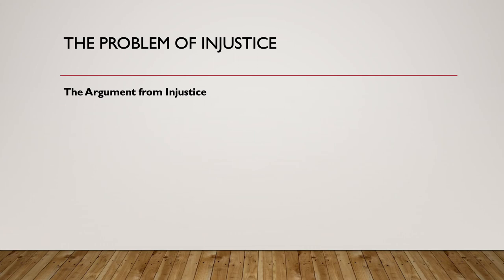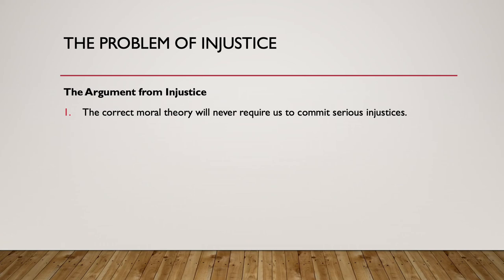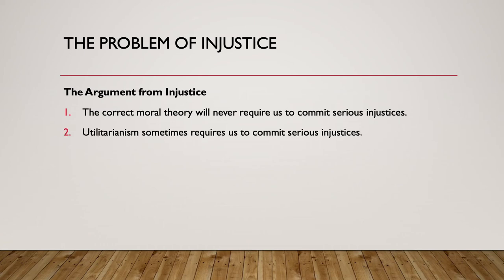However, this moral flexibility comes back to haunt utilitarianism. There is nothing intrinsically wrong with violating people's rights or doing an injustice — these are merely means to an end. So when we can better achieve that end by violating rights or doing injustice, utilitarianism requires that we do so. That leads to the argument from injustice: premise one — the correct moral theory will never require us to commit serious injustices. Premise two — utilitarianism sometimes requires serious injustices. Therefore, utilitarianism is not the correct moral theory.